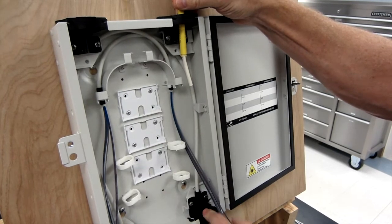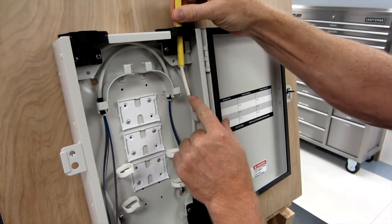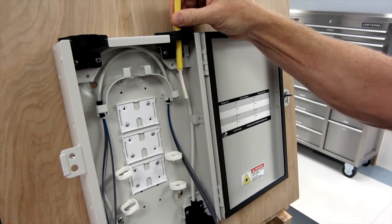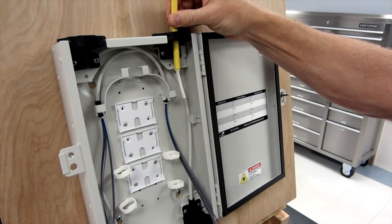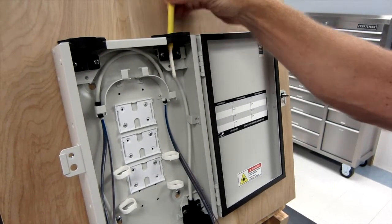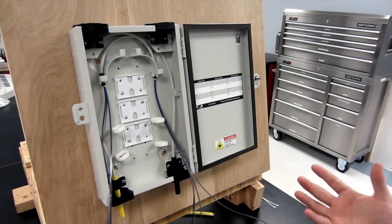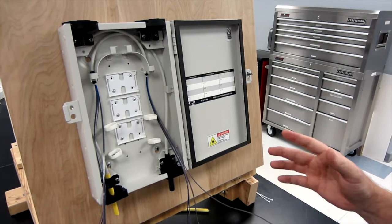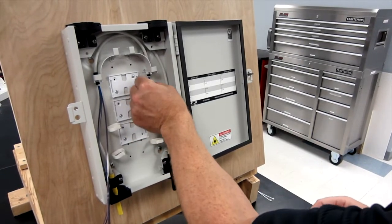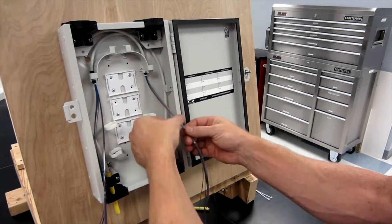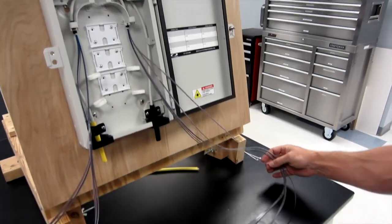Basically, from this point or this point, you measure your length of ribbon needed according to the instructions, cut those to length, clean them up, and make your splices. In this case, we've already made our splices, but it's important prior to doing that to make sure you take the twist out of your ribbon.